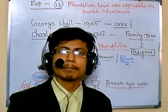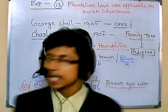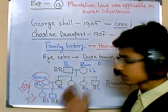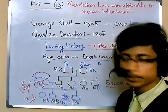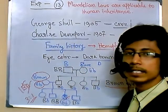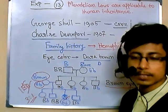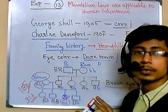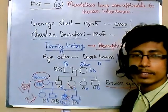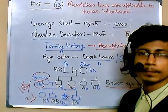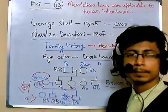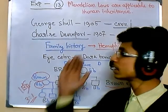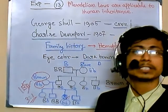As time passed and newer experiments were conducted, Charles Davenport and his colleagues at Cold Spring Harbor Laboratory (CSHL) started a new office called the Eugenics Office. In that office, they began collecting family trees from different populations and people, and analyzed those trees to find out whether Mendel's genetic rules were applicable to human genetics.